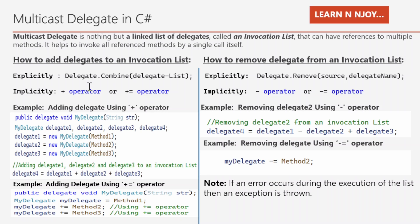The second way is to use the plus operator or the plus-equal-to operator. In the example of adding a delegate using the plus operator: first, we define the delegate — public delegate MyDelegate string str. Then we have delegate1, delegate2, delegate3, delegate4 as instances of MyDelegate. Delegate1 is assigned method1, delegate2 is assigned method2, delegate3 is assigned method3. Now we use the plus operator: delegate4 = delegate1 + delegate2 + delegate3. So all of delegate1, 2, and 3 now have a reference in delegate4 itself — we have created an invocation list stored in delegate4.